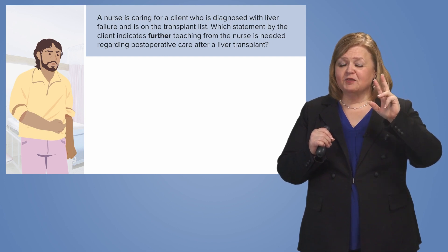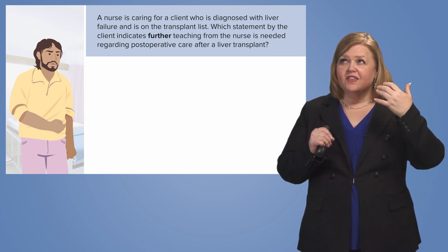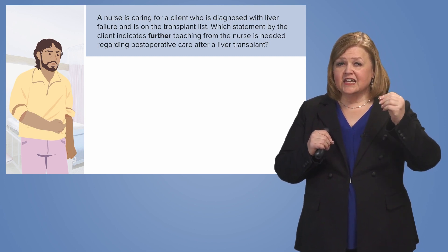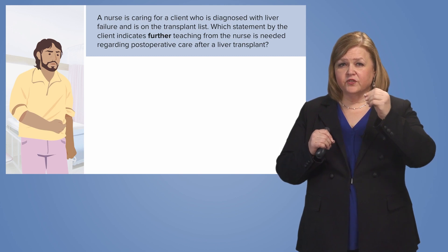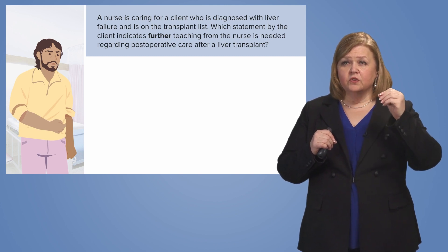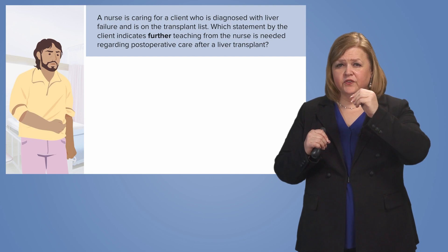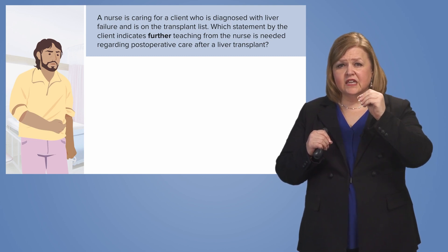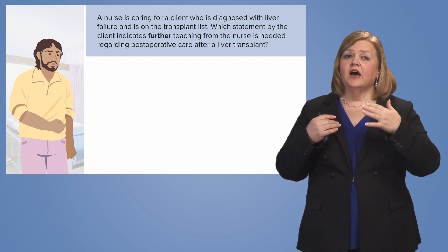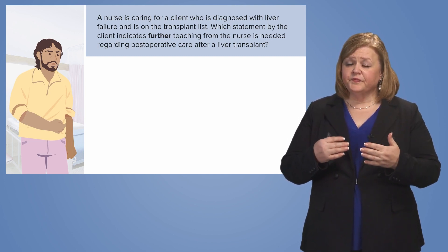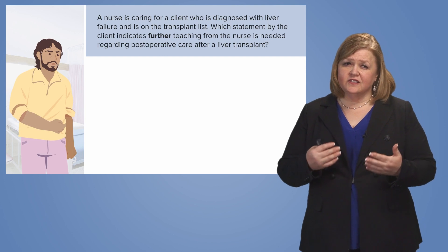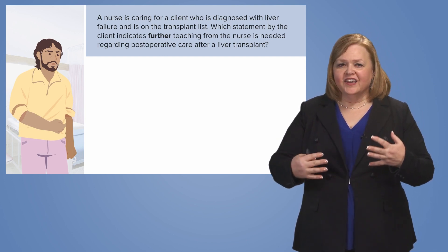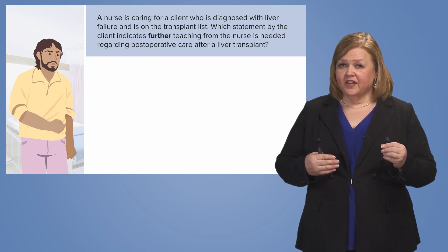You can't see the answers yet because I want you to know the strategy. When you look at answer choice number one, you're going to read it and then say: does this indicate the need for further teaching? Number two — does this indicate the need for further teaching? Number three — does this indicate the need for further teaching? I know that seems very tedious, and if you're just learning these skills, it's going to feel like you're swimming through jello. It's going to seem so slow. That's okay.